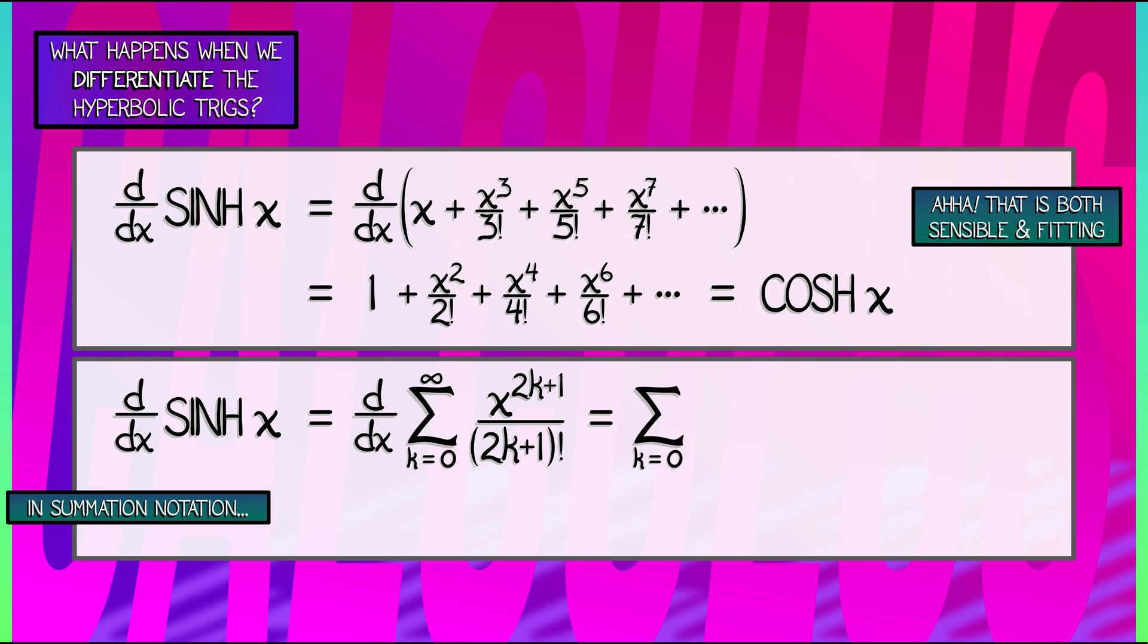That's going to give me what? The sum k goes from 0 to infinity of the derivative of x to the 2k plus 1. What's that? That's quantity 2k plus 1 times x to the 2k.